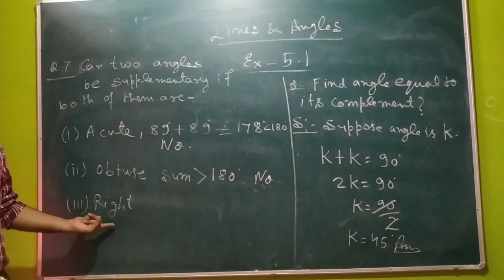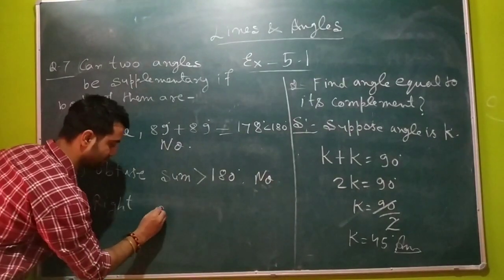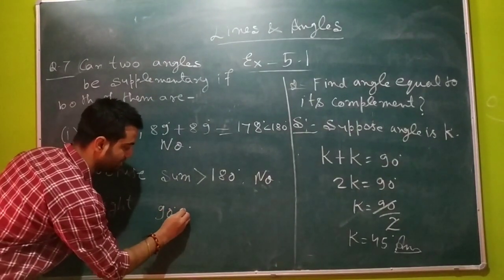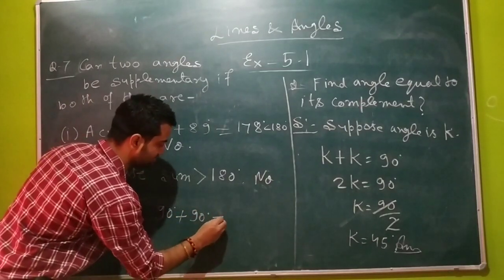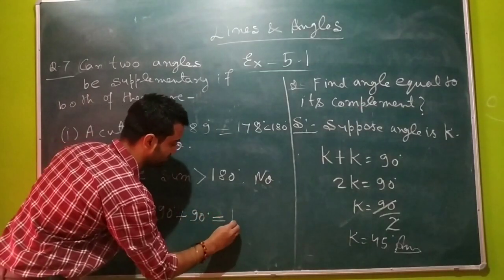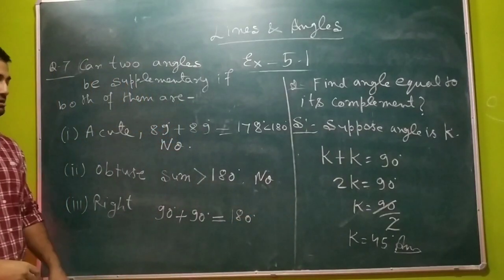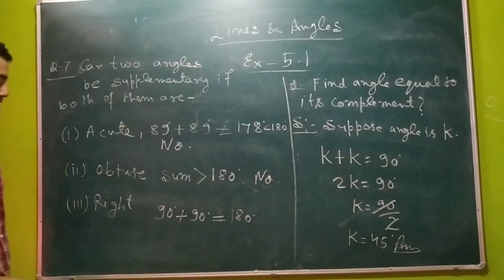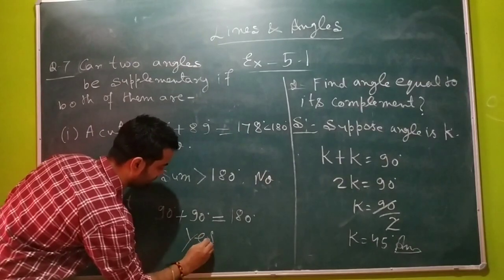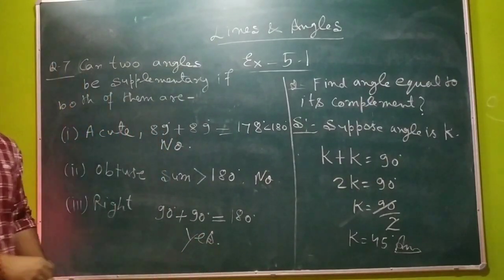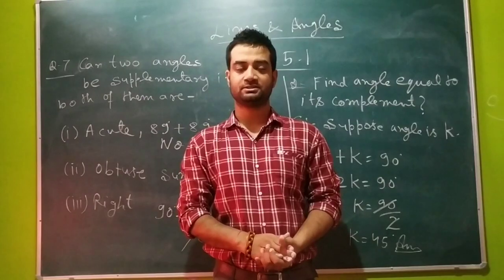When we are talking about right angles, the value of a right angle is fixed, which is 90 degrees. And when we add 2 right angles, the answer we get is 180 degrees. So yes, 2 right angles can be supplementary. Hope you have understood the solution of these questions.